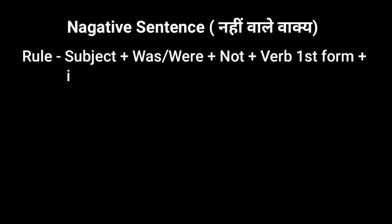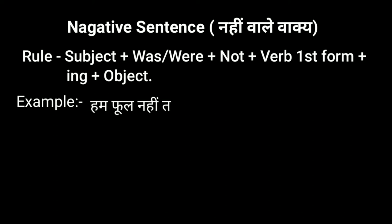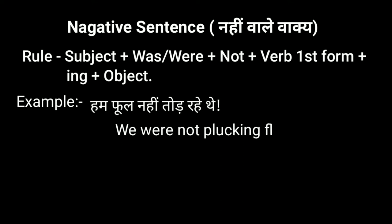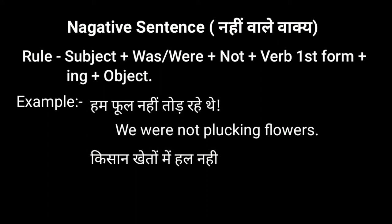Now we come to the negative sentence. To make this we use: Subject + was/were + not + verb first form + ing + object. For example, 'हम फूल नहीं तोड़ रहे थे' — 'We were not plucking flowers.' In this, 'we' is the subject, 'were' is the helping verb, 'not' is used for negation, and 'plucking' is the verb first form plus ing.